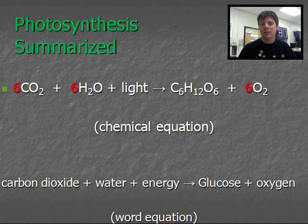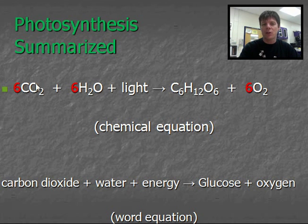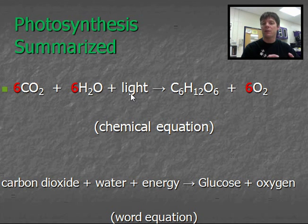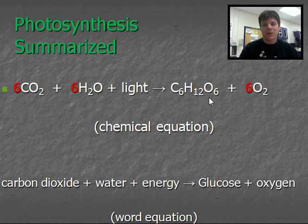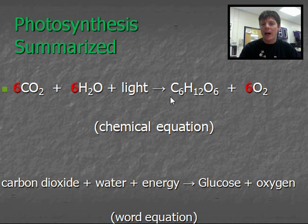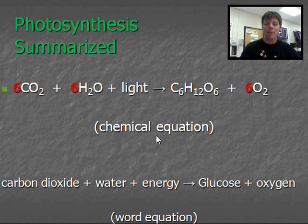So we want to take a look first at the chemical equation which describes photosynthesis. The chemical equation tells us that carbon dioxide molecules will react with water molecules in the presence of light to produce this molecule, C6H12O6 — that's glucose, it's a sugar — plus oxygen. I've added in red the coefficients which are required to balance this chemical equation.